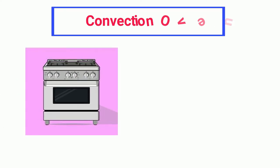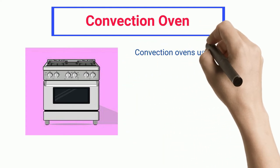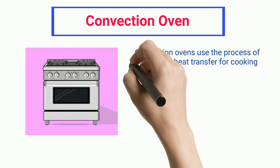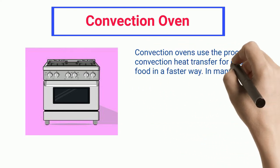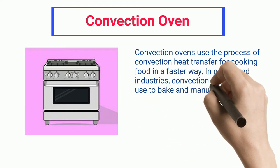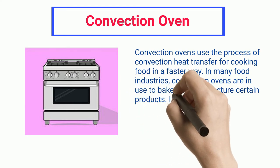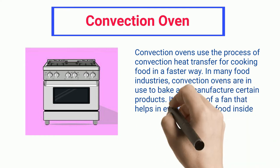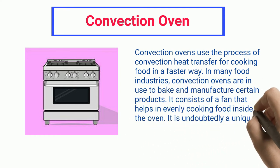Convection Oven: Convection ovens use the process of convection heat transfer for cooking food in a faster way. In many food industries, convection ovens are in use to bake and manufacture certain products. It consists of a fan that helps in evenly cooking food inside the oven. It is undoubtedly a unique example of convection heat transfer.